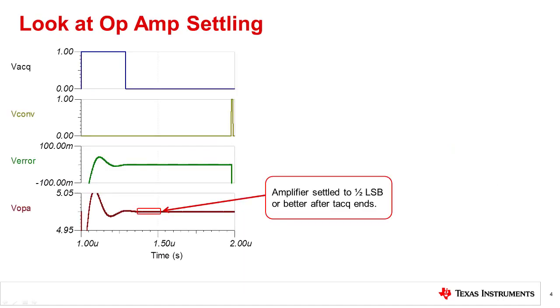Another approach to looking at settling beyond the end of the acquisition period is to look at the op amp output. This serves a similar purpose to expanding the acquisition period in that a robust design's op amp output will be settled to one half of an LSB at the end of the acquisition period.